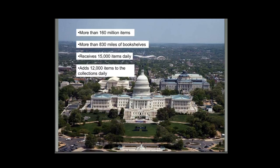I've also put some statistics on the screen. The library has more than 160 million items. There are more than 830 miles of bookshelves. The library receives, through copyright deposit and other means, approximately 15,000 items a day. And of those, it adds to the collections about 12,000 items a day. For any librarians in the audience, just think about the task of processing up to 12,000 items a day.